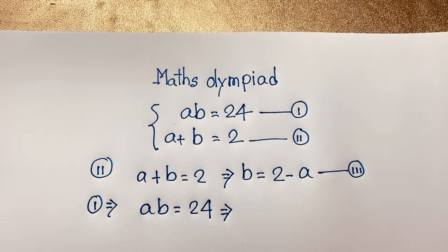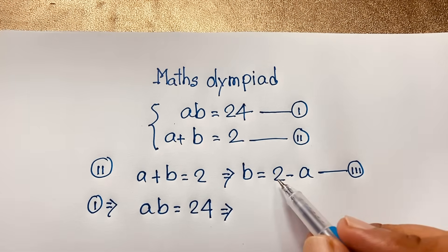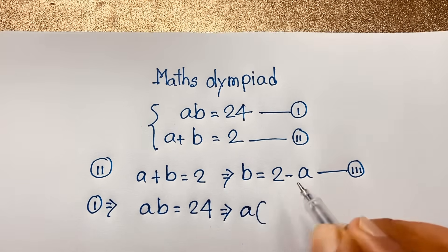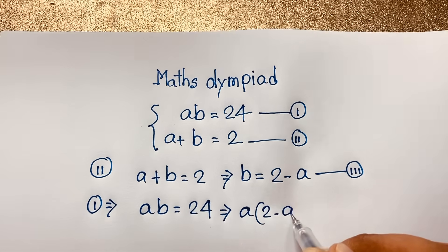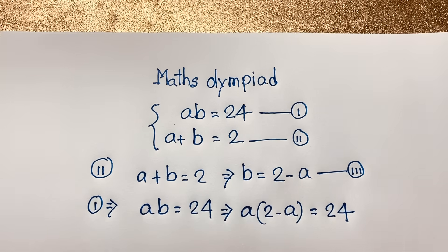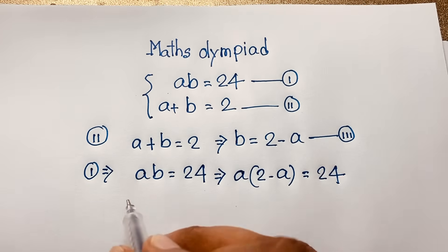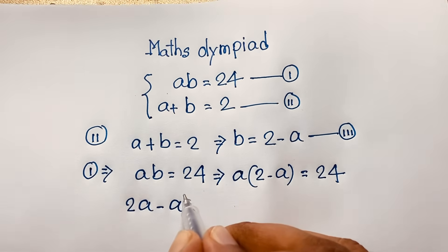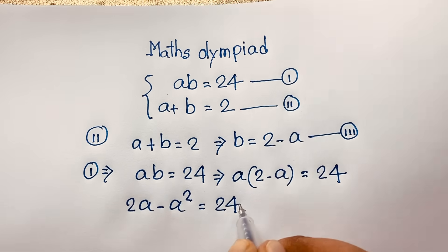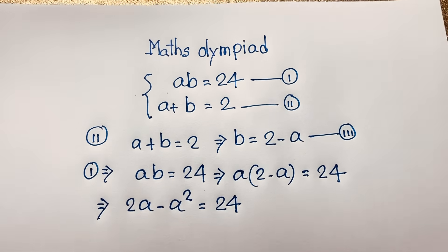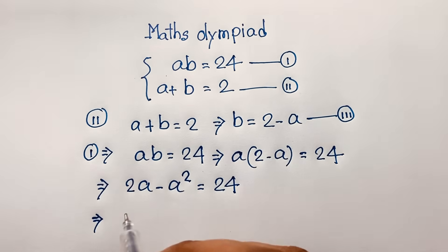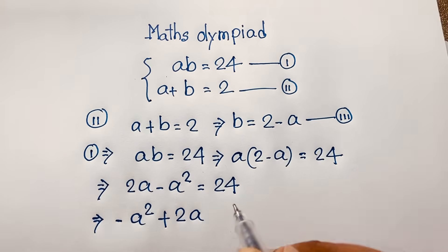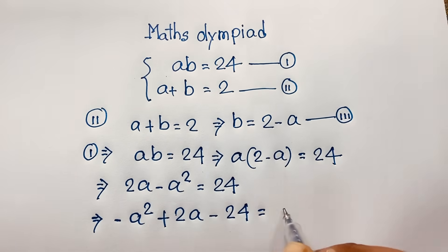Now remember that b is equal to 2 minus a, so I put this value in. It will be a times (2 minus a) is equal to 24. Now here, 2 times a will be 2a, minus a times a will be a squared, is equal to 24. Then I can write this as: negative a squared plus 2a minus 24 is equal to 0.